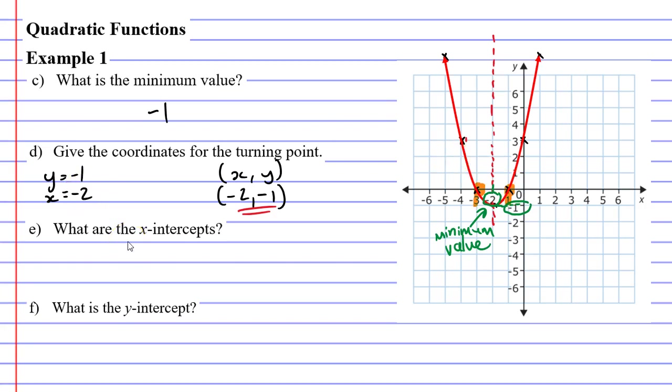So we can write our solutions as negative 3 and negative 1 as our x-intercepts. Now, I like to be a bit more accurate when I do this. I like to write them as points. So the point at which x is negative 3 is actually negative 3 comma 0. And that's because when x is negative 3, it has a y value of 0.